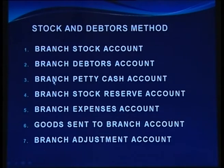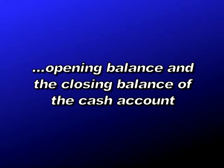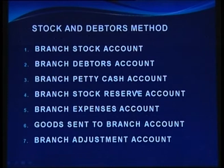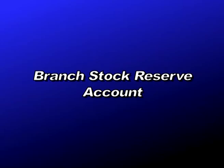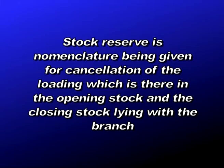The petty cash account records opening and closing balances and any expenses incurred out of the petty cash. The branch stock reserve account handles the cancellation or transfer of the loading, because goods are invoiced to the branch at invoice price — that is, cost plus profit. When we need to segregate the profit element in the opening and closing stock, we use the branch stock reserve account. Stock reserve is the nomenclature for cancellation of loading in the opening and closing stock lying with the branch.